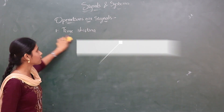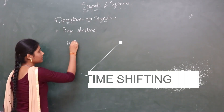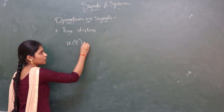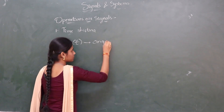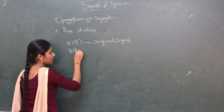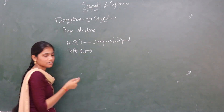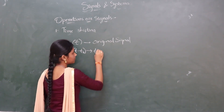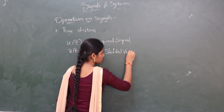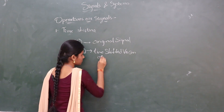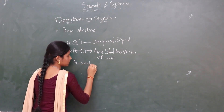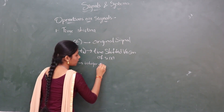First, let us see about time shifting of continuous time signals. Let x of t be the original signal. Here, x of t minus t0 represents the time shifted version of x of t, where t0 is an integer or constant.